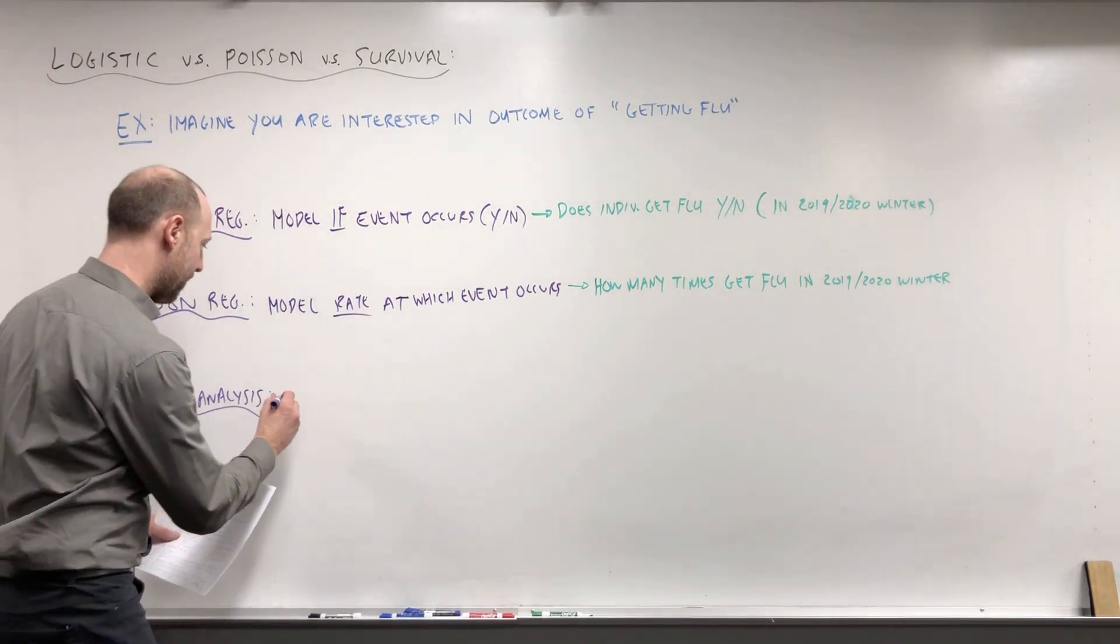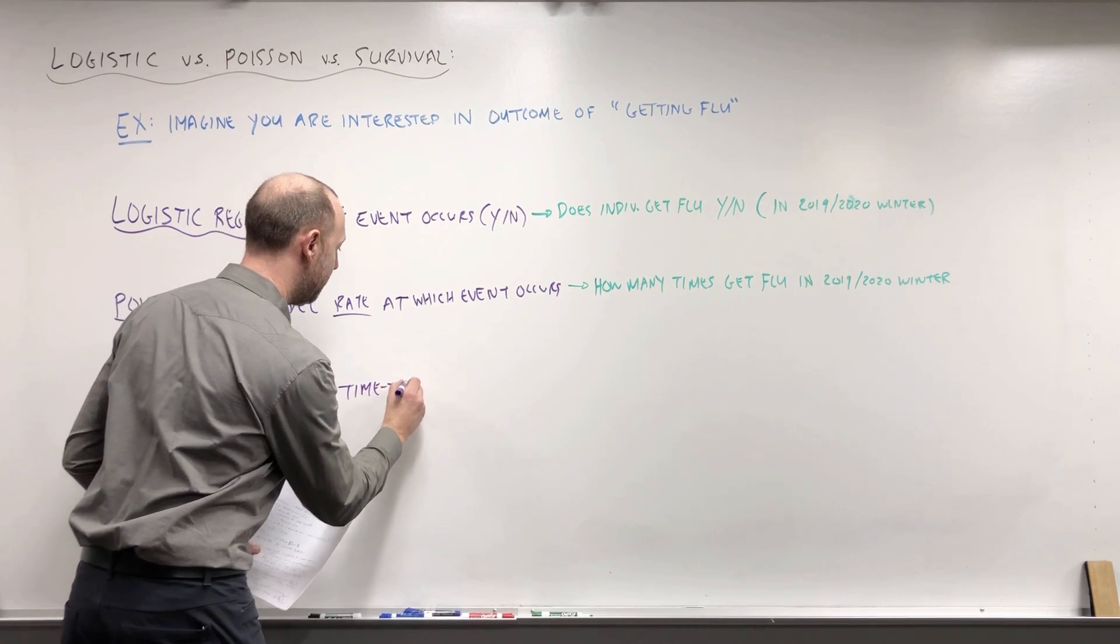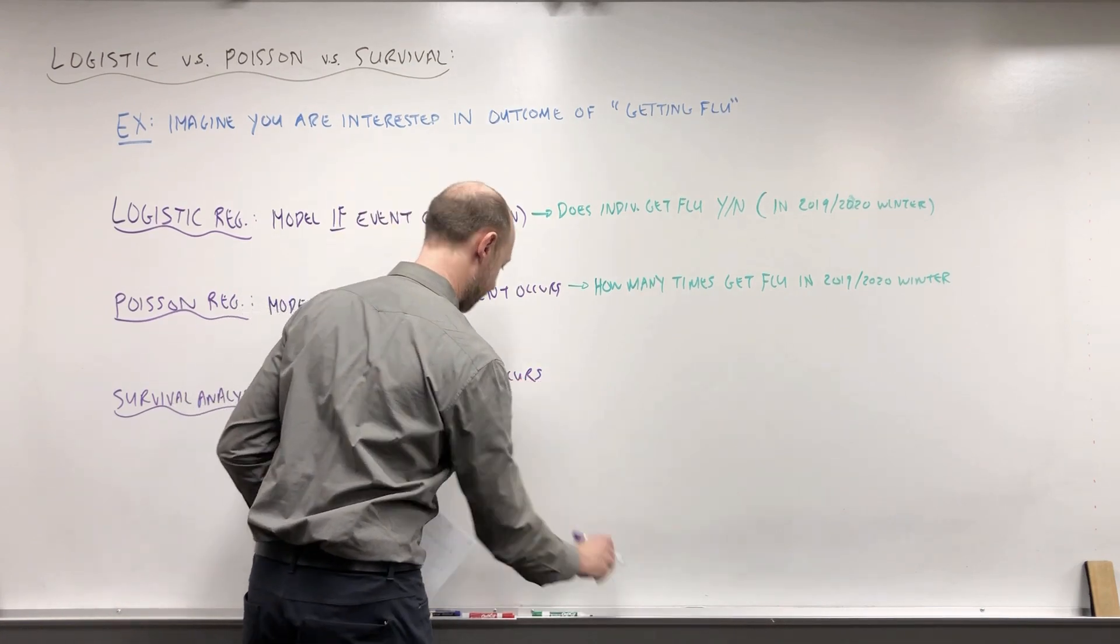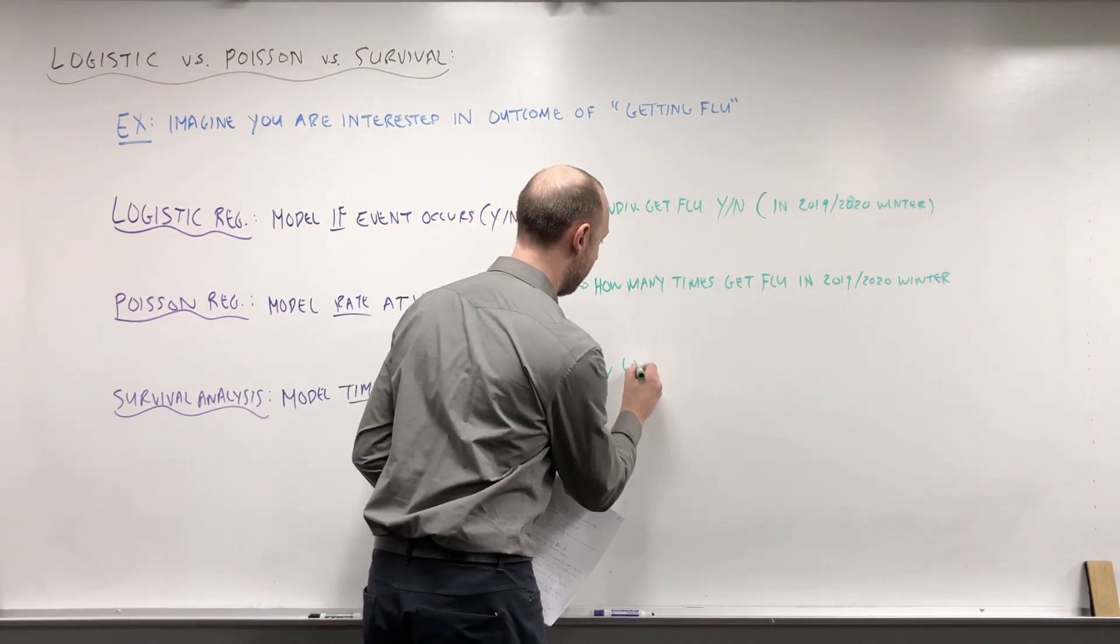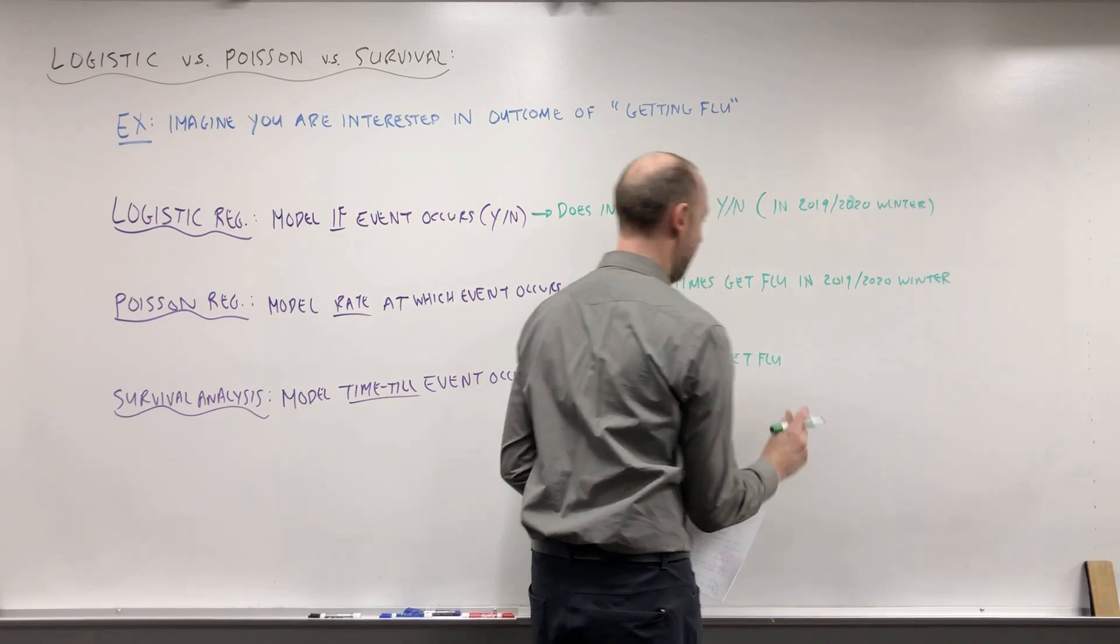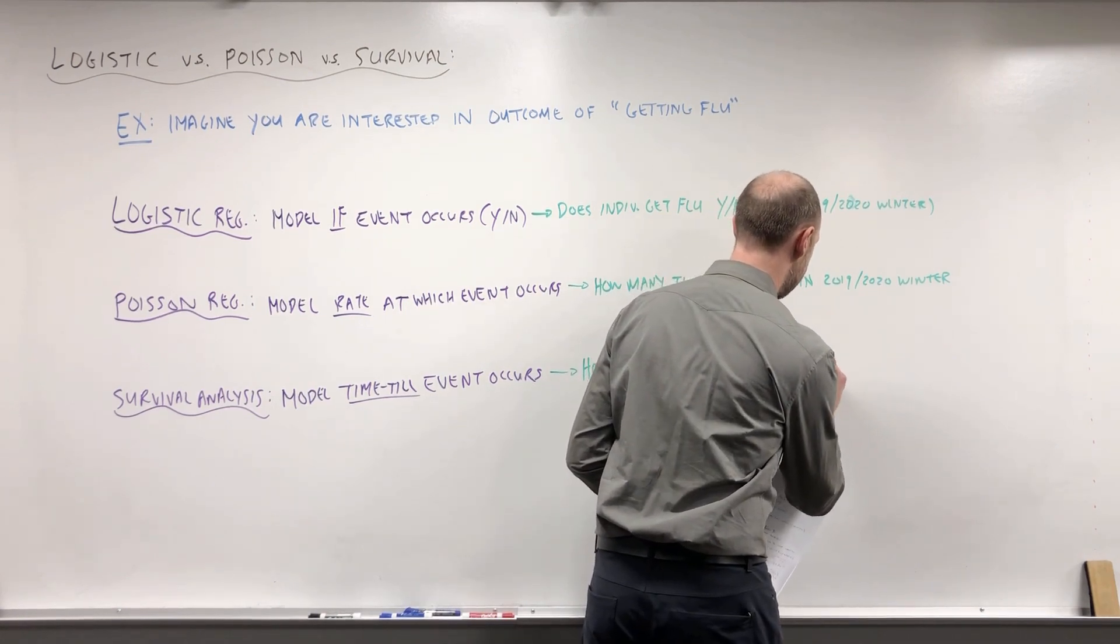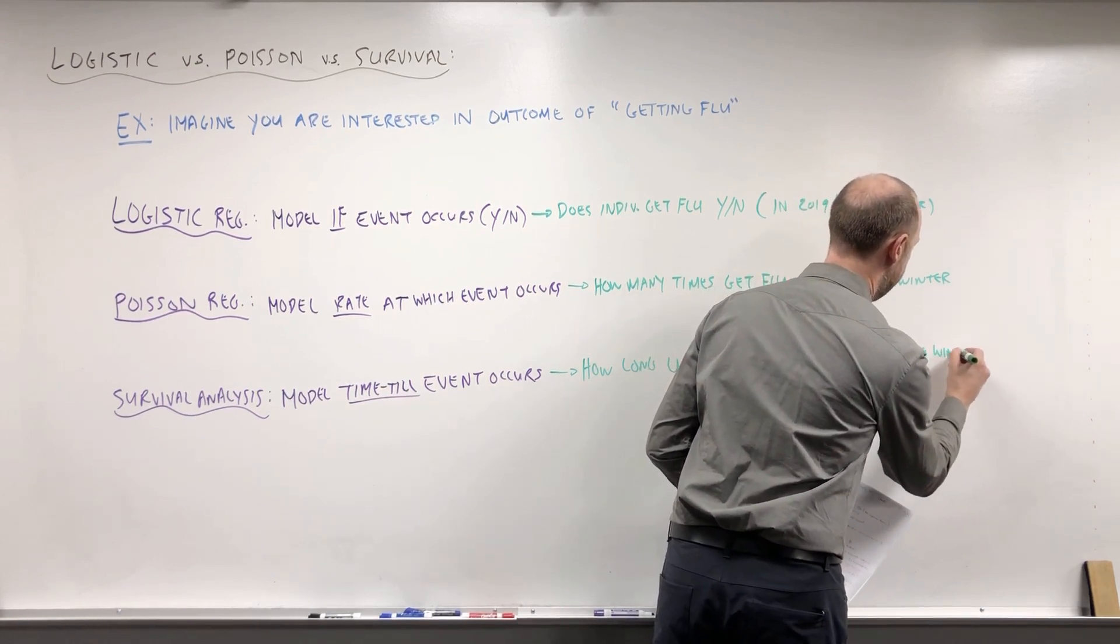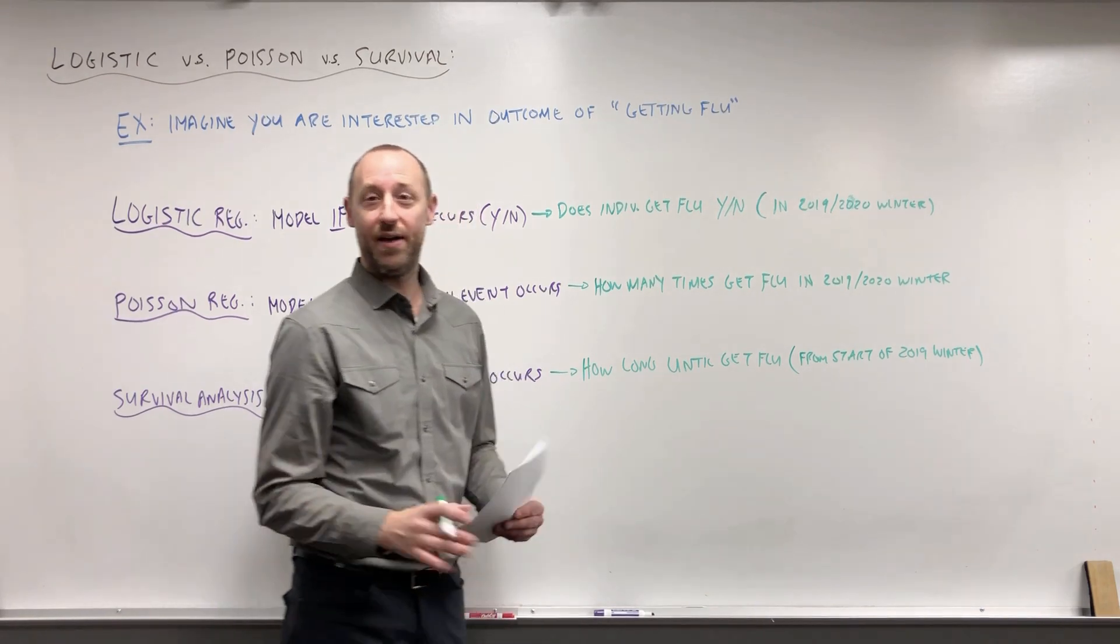Survival analysis. What we're going to model there is the time until the event occurs. So in this same context, we could think of asking a question like: how long until someone gets the flu? And again, here you need to have some start point defined. Let's consider measuring from the start of the 2019 winter. So from the first day of the 2019 winter, once that starts, how much time goes by until someone gets the flu?